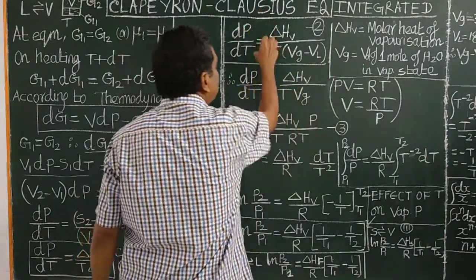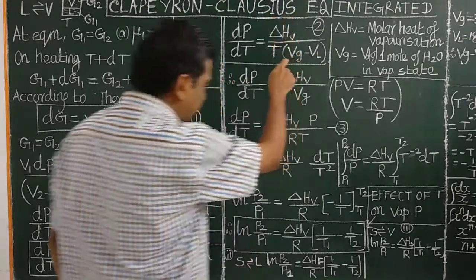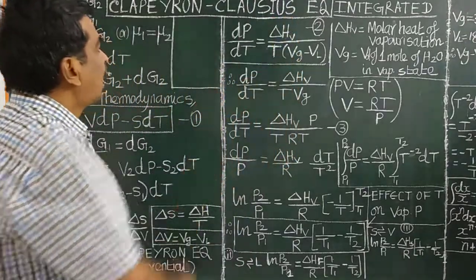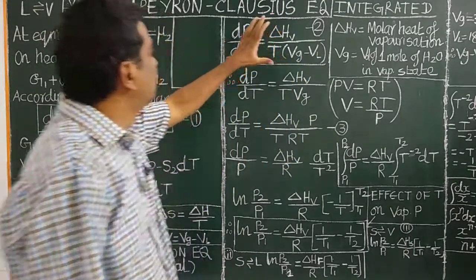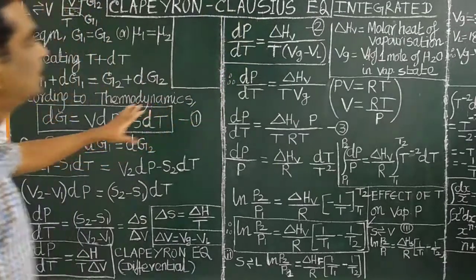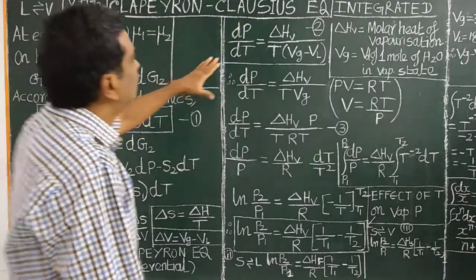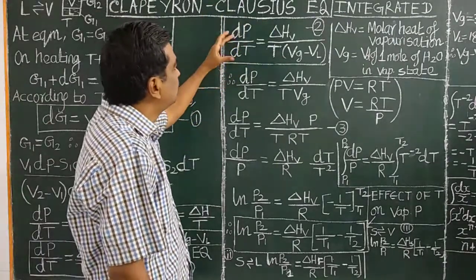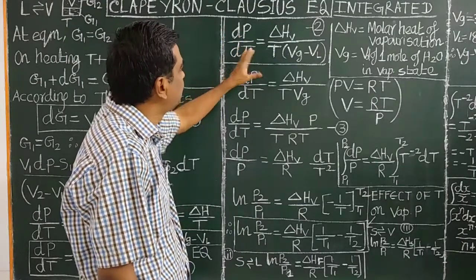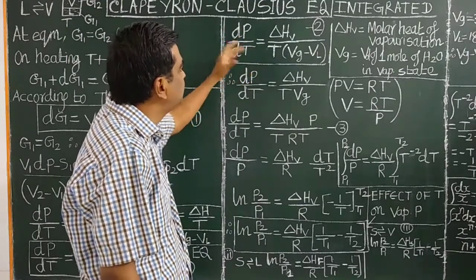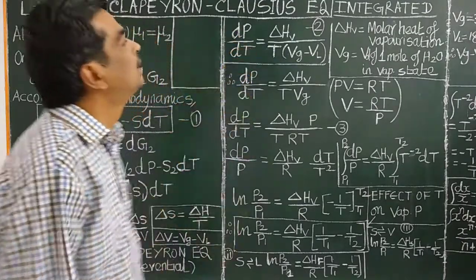This is the differential form of the Clausius-Clapeyron equation, which gives the rate of change of pressure per unit change in temperature, i.e., dP/dT.